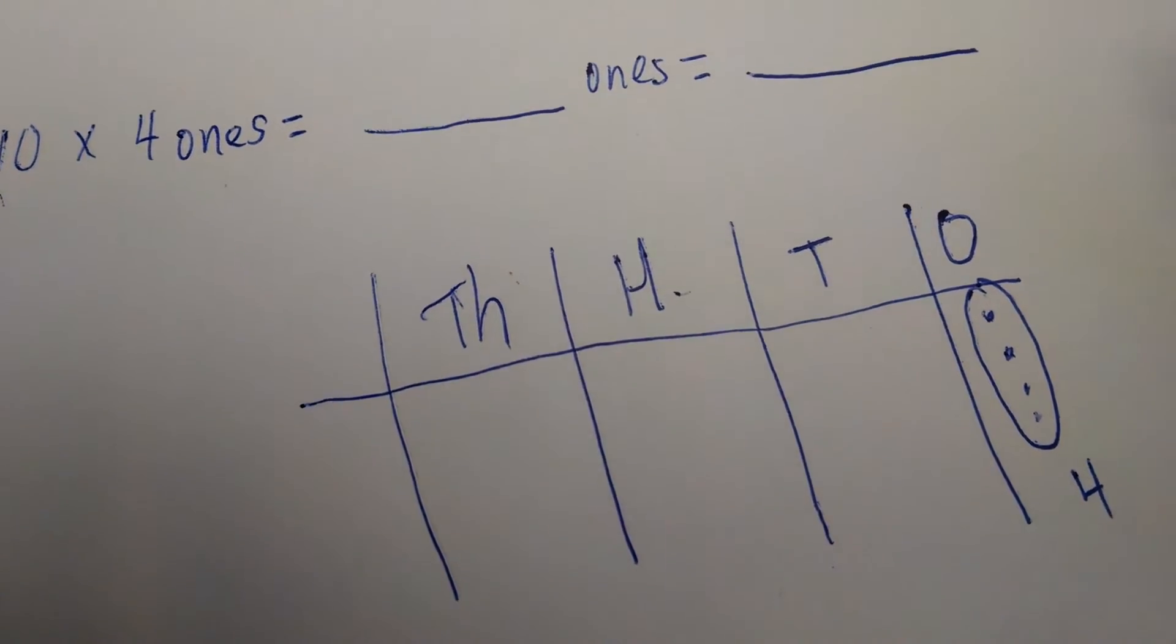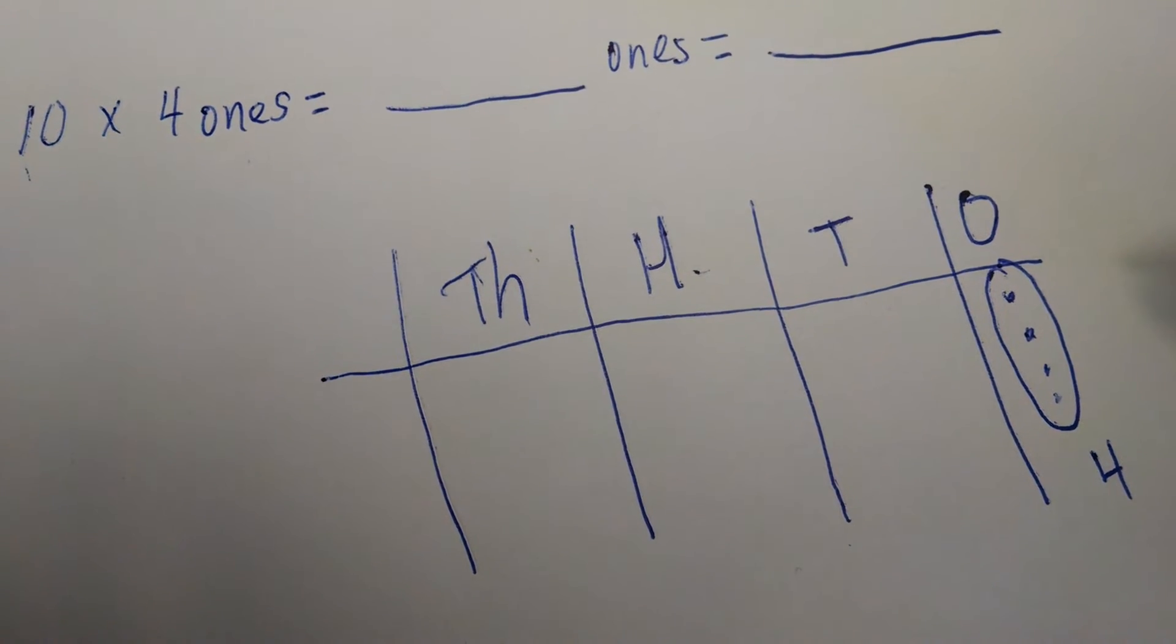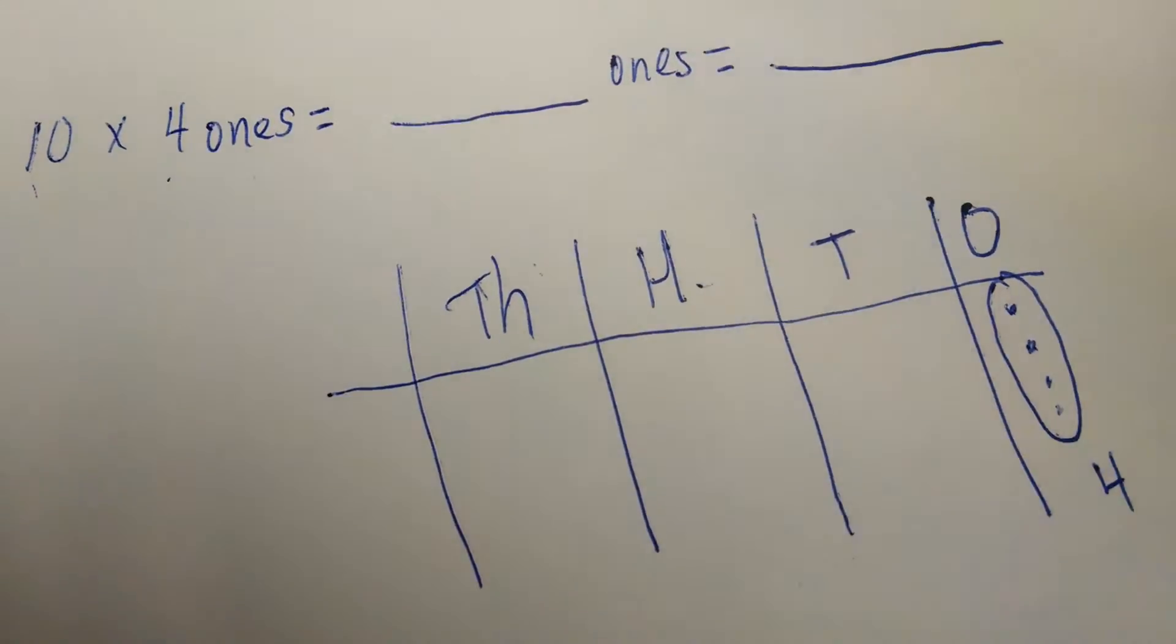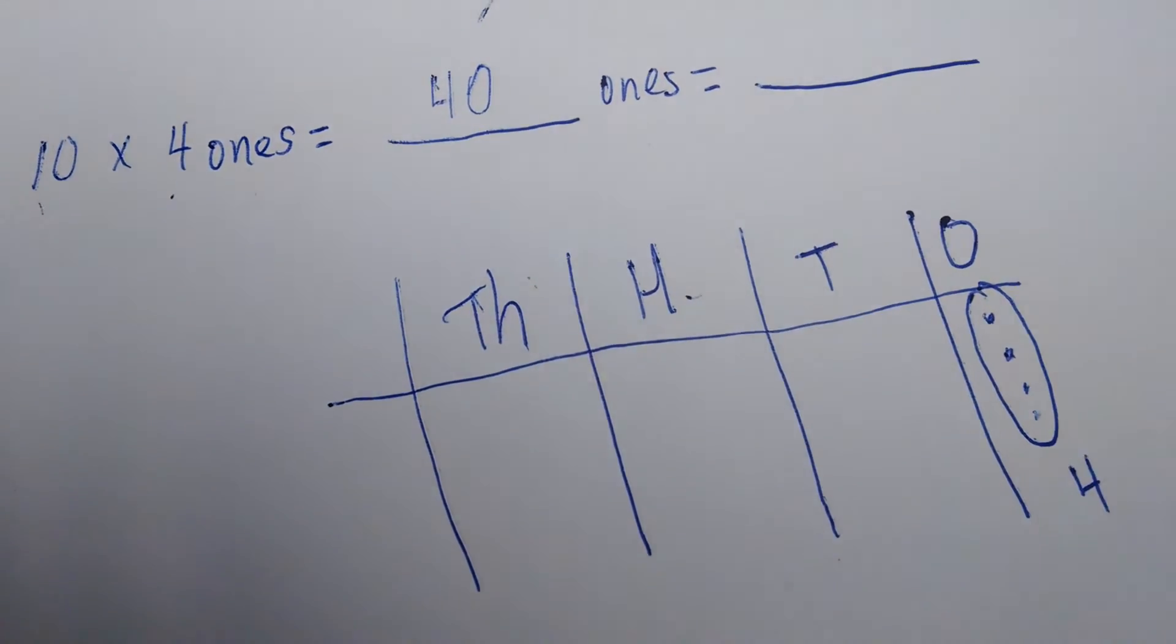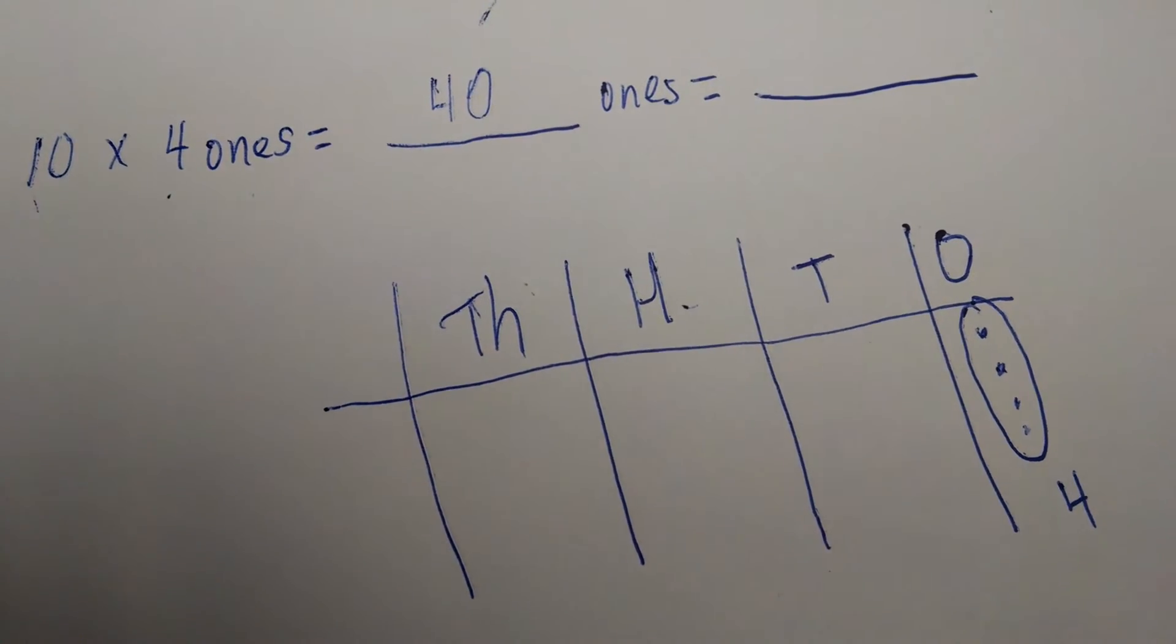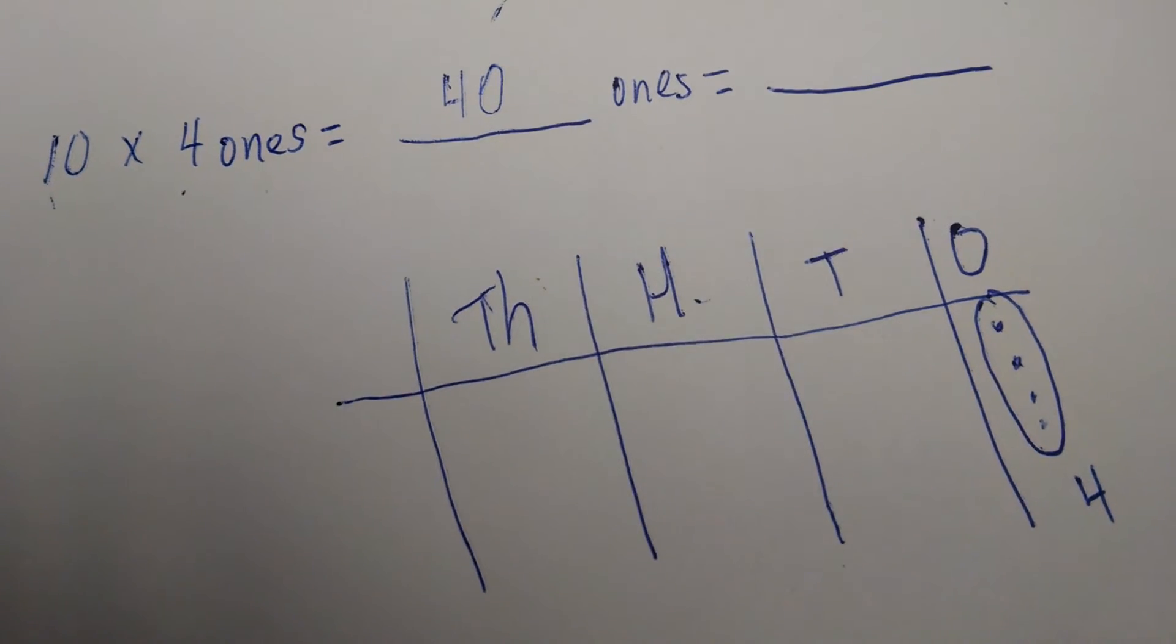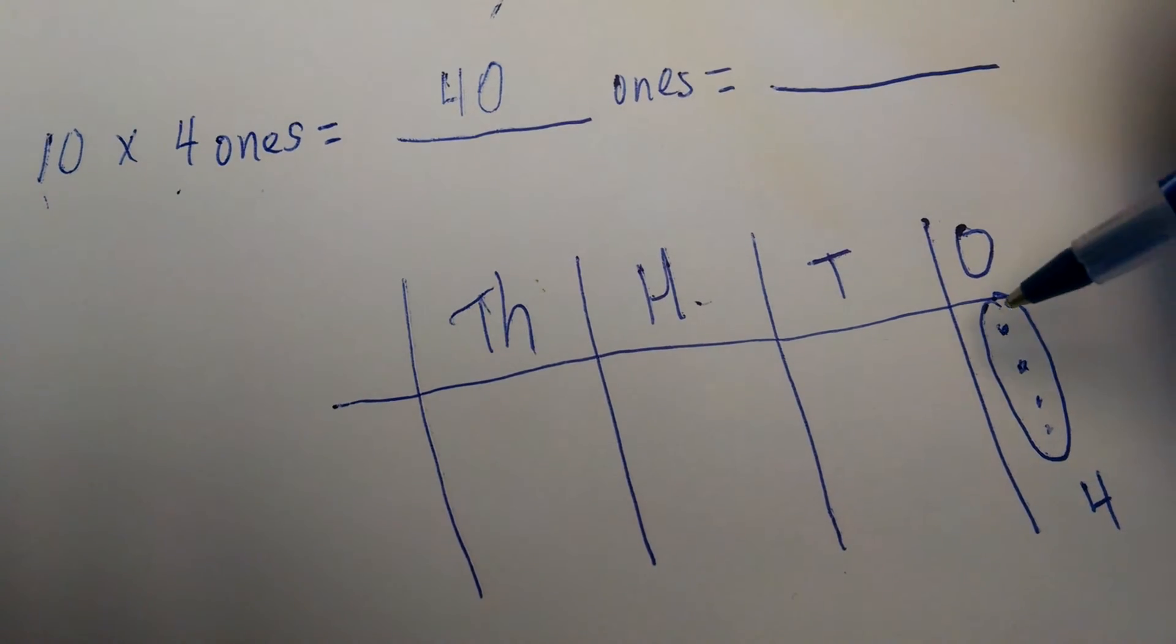Now if I multiply that by 10, how many ones would that equal? Well, 10 times 4 is 40, so this would become 40 ones. Think of money as an example: if I had 4 ones and I multiply the amount of money that I had by 10, I have 40 one-dollar bills.